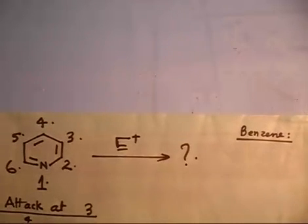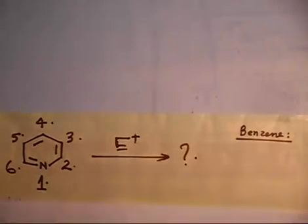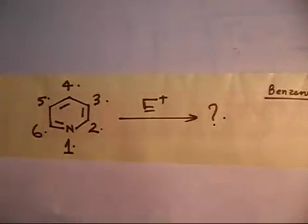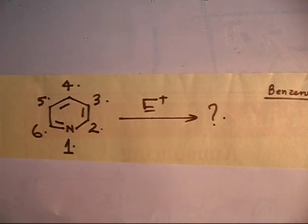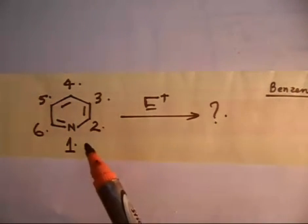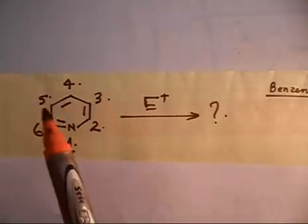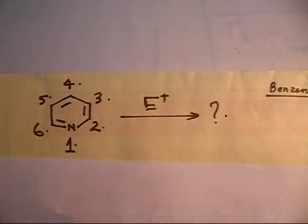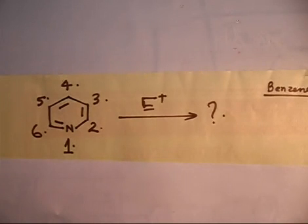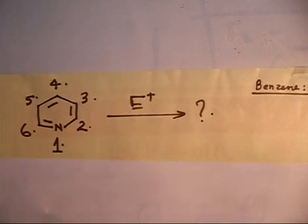Let us discuss the next problem. This molecule is called pyridine — earlier we discussed something about pyrrole. If an electrophile attacks on pyridine, it will attack either on position number 2, position number 3, or position number 4. Note that 3 and 5 are equivalent, and 2 and 6 are equivalent, so there are effectively three distinct positions.